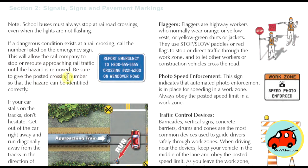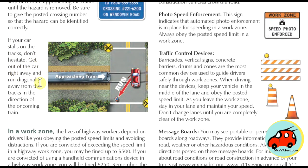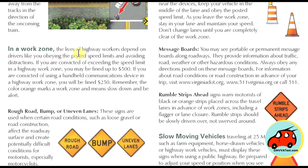Note that school buses must always stop at railroad crossings even when lights are not flashing. If your car stalls on the tracks, don't hesitate — get out of the car right away and run diagonally away from the tracks in the direction of the oncoming train. In a work zone, the lives of highway workers depend on drivers obeying posted speed limits and avoiding distractions. If you are convicted of exceeding the speed limit in a highway work zone, you may be fined up to $500. If convicted of using a handheld communication device in a highway work zone, you can be fined $250. The color orange marks a work zone and means slow down and be alert.